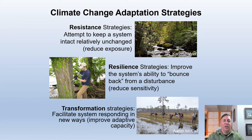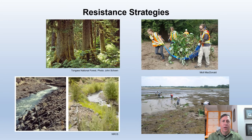Now I'll talk about climate change adaptation strategies. I'm mostly going to discuss it from an ecological standpoint, but it applies to human communities and infrastructure also. These include resistance, which is attempting to keep a system intact and relatively unchanged; resilience, which is improving the system's ability to bounce back from a disturbance; and transformation, which is facilitating the system to respond in new ways, like planting species adapted to a hotter climate. Resistance strategies include things like protecting existing ecosystems from development, over-harvesting, and stressors like fire, disease, and invasive species.